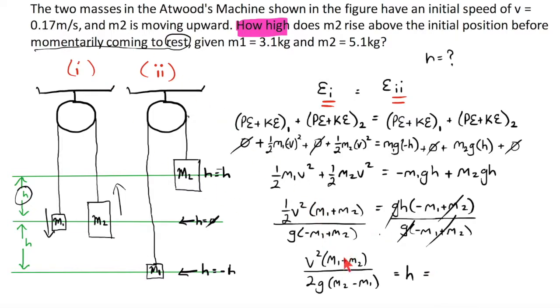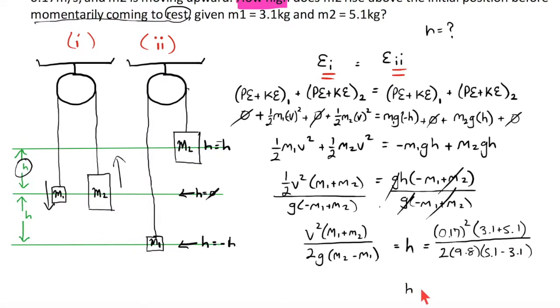Now we just plug and chug because all of these things we know. So v squared would be, from up here, 0.17 squared and m1 plus m2, that's 3.1 plus 5.1. All over 2 times g times m2 minus m1, 5.1 minus 3.1. So having solved all of this, give me a moment while I go to my calculator.